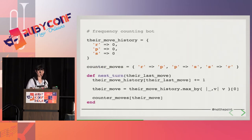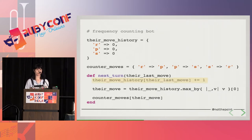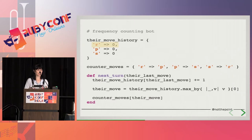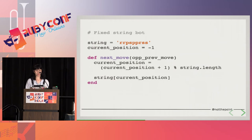This is the frequency counting bot, and it is a bot that is actively trying to beat other bots. It's using frequency analysis to determine which move to play. Here we increment our counter with their last move, we take the move with the highest count, and we return our counter move. Against the always-rock bot, only the rock count in our hash would increase, meaning this bot would beat it every time. In fact, this bot would beat any opponent that chose rock, paper, and scissors with different statistical frequencies.